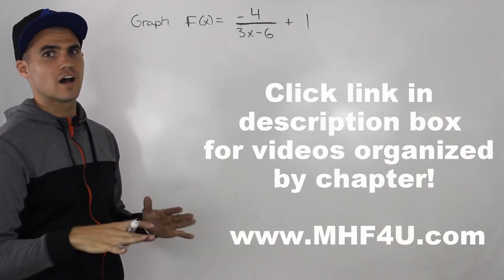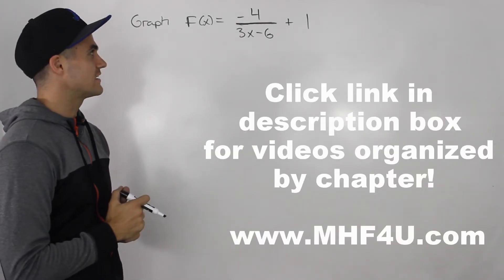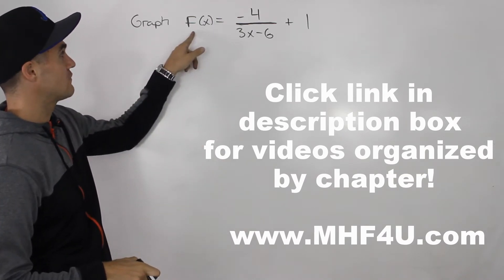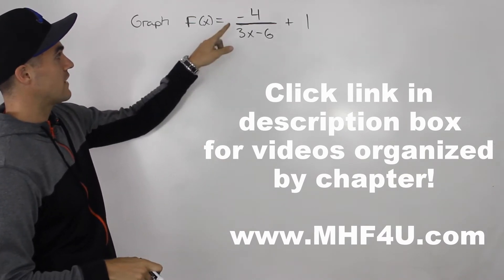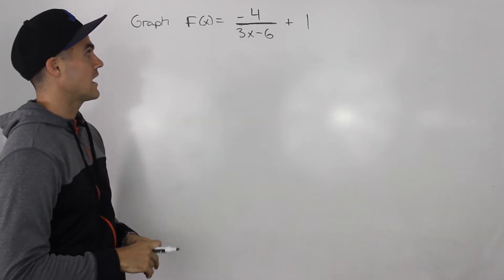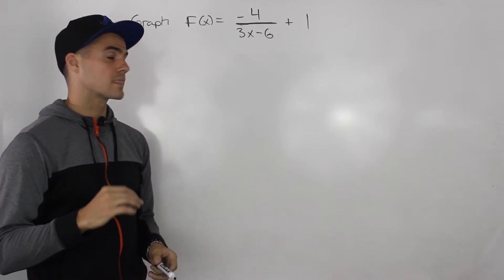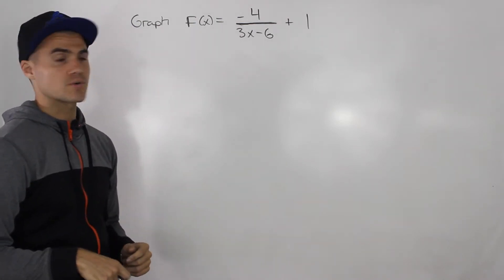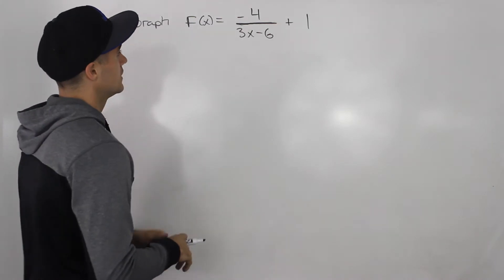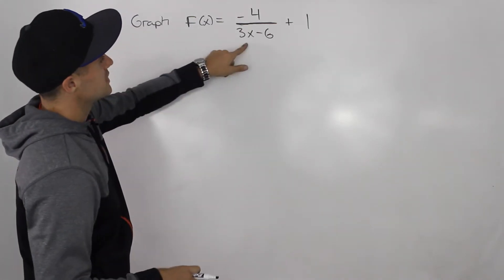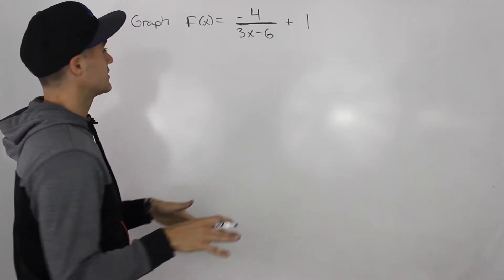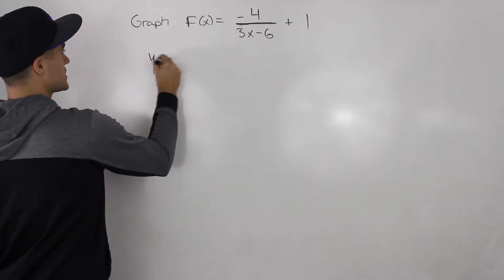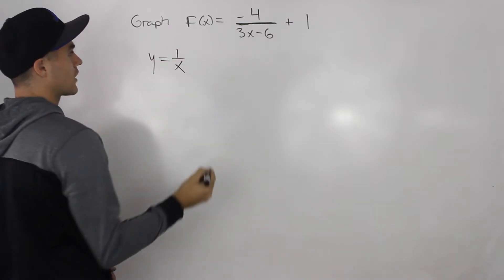We've reached the last question on the test. We have to graph f(x) = -4 / (3x - 6) + 1 and state a few characteristics for this function. The first thing to recognize is that x is in the denominator, so we know the parent function we're dealing with is 1/x.